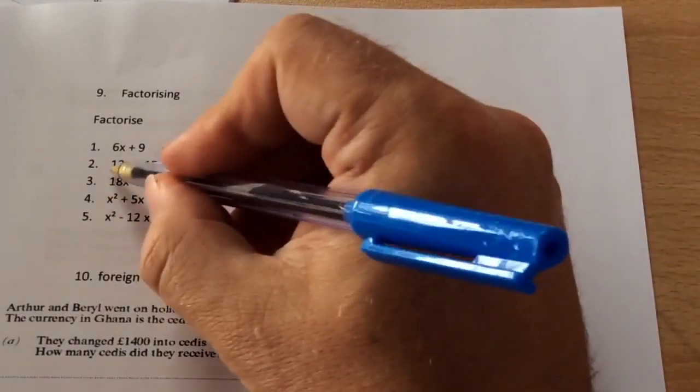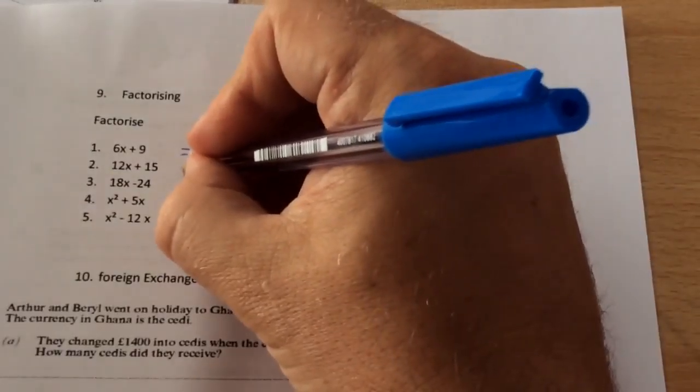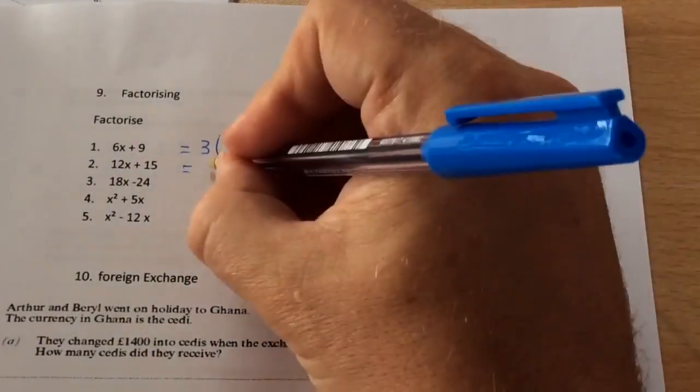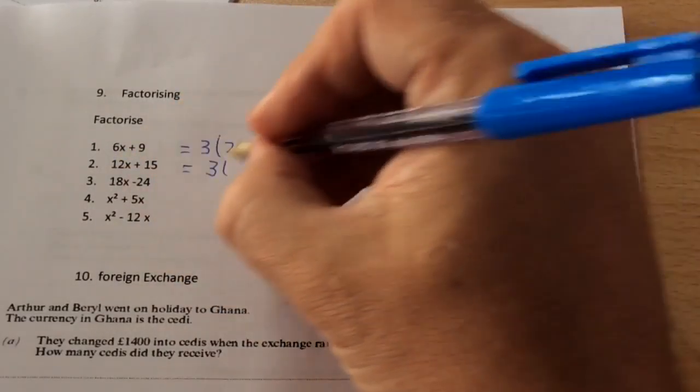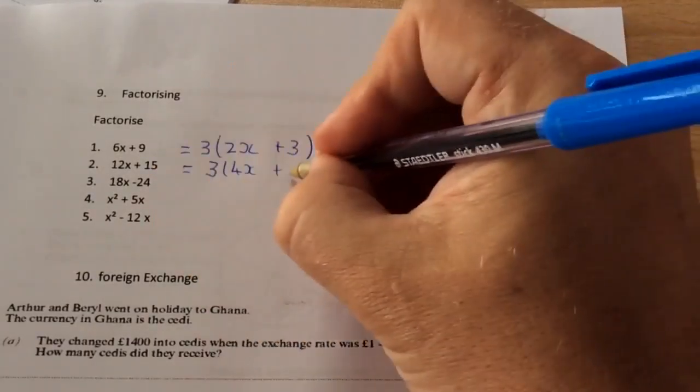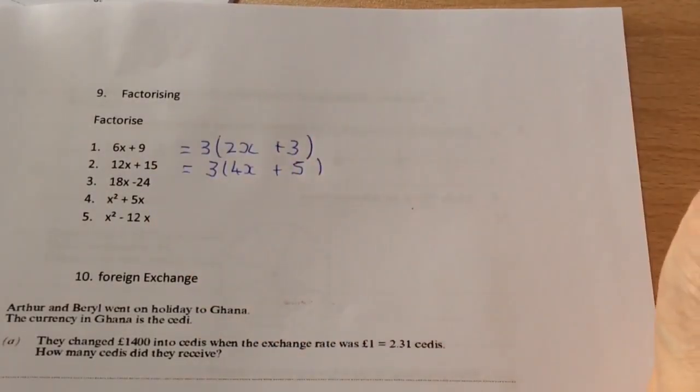If I'm looking at the second one, I'm asking myself, what's the highest number that goes into 12 and 15? And the highest number that goes into both of them is 3 again. How many 3's in 12x? 4x. How many 3's in 15? 5.